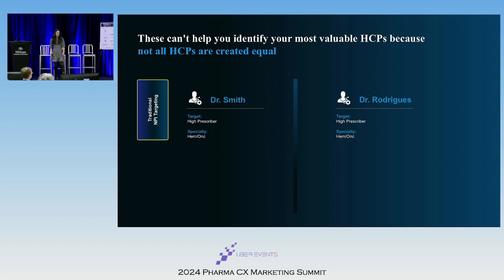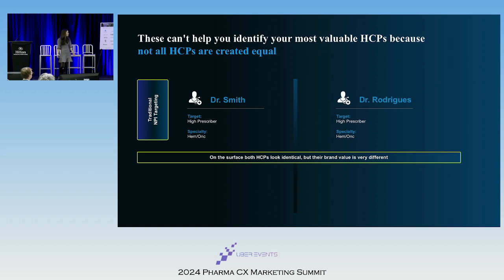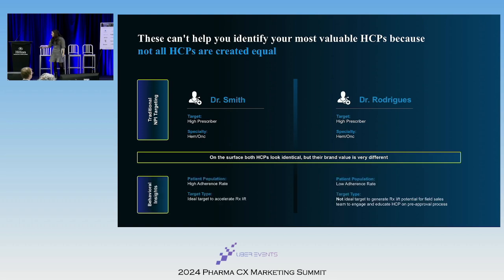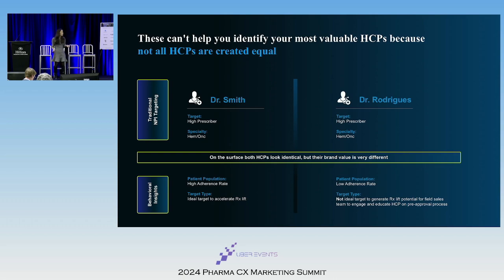Let's look at an example. On the surface, both Dr. Smith and Dr. Rodriguez look the same — both high prescribers — but their value to the brand is very different because of their patient population. On the left, Dr. Smith's patient population has a really high adherence rate, making Dr. Smith more valuable to the brand because his patients are staying on treatment. Dr. Rodriguez would probably be more of a candidate for the sales field team to engage with. With advancements in AI and machine learning, we can enable customized messaging across all channels and drive more informed patient and provider conversations.